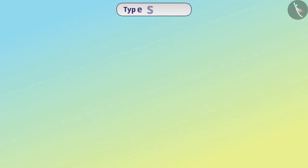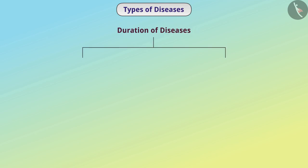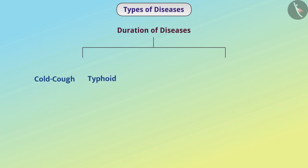We can divide diseases into different groups. One way is to classify diseases on the basis of duration. Some diseases like cold, cough, and typhoid occur suddenly and are of short duration. Such diseases are called acute diseases. Acute diseases do not harm our health much.